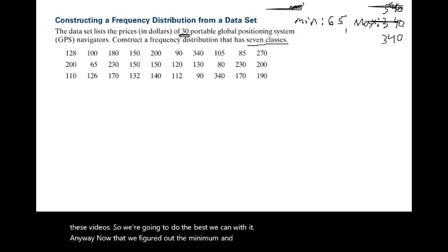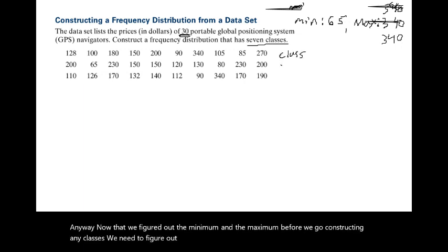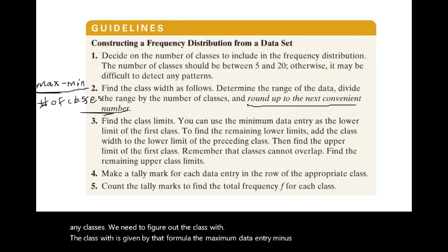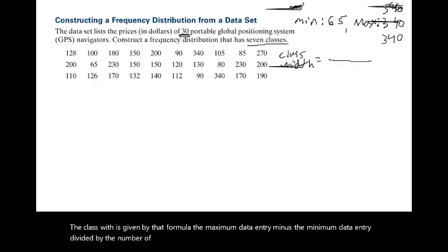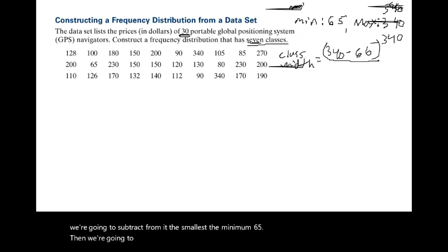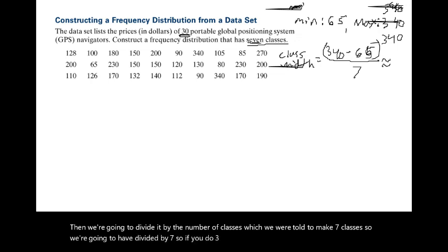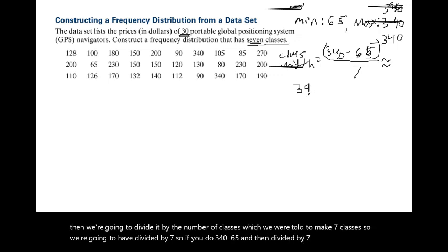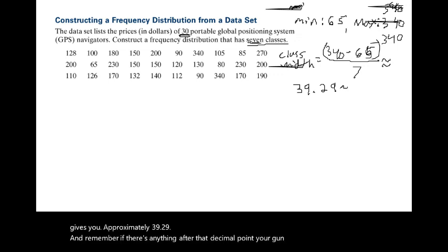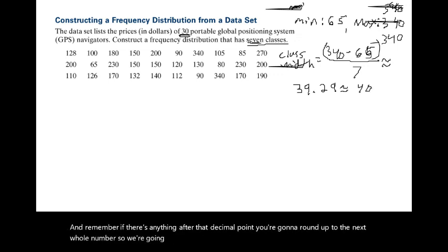Now we need the class width before constructing any classes. Using the formula: maximum minus minimum divided by number of classes — that's 340 minus 65, divided by 7 (since we were told to make 7 classes). That gives approximately 39.29. Since there is a decimal, we round up to 40. The class width is 40.